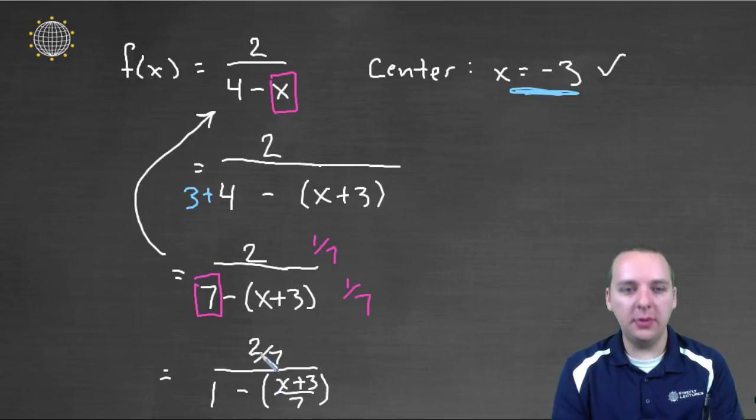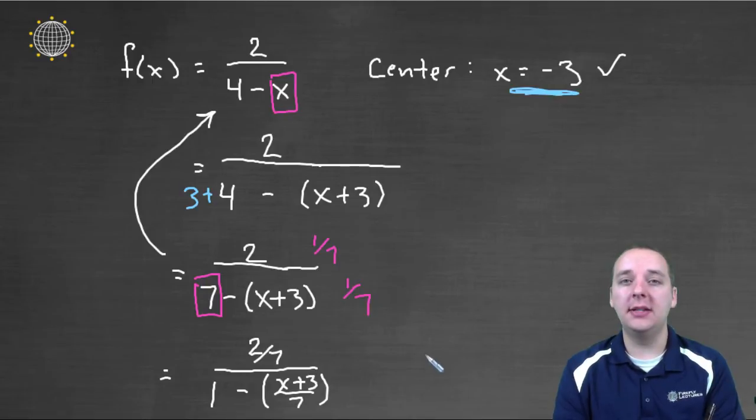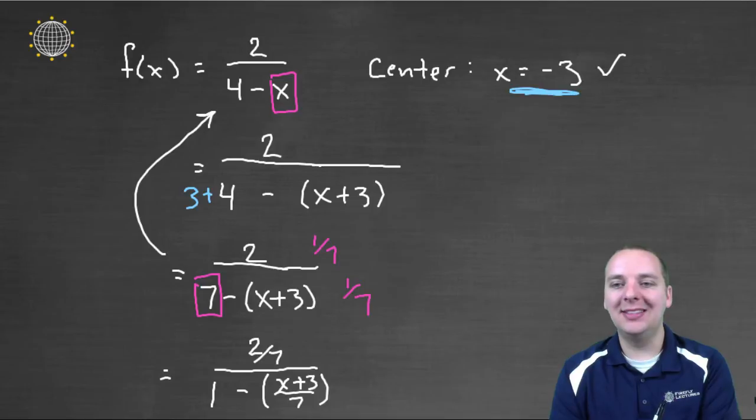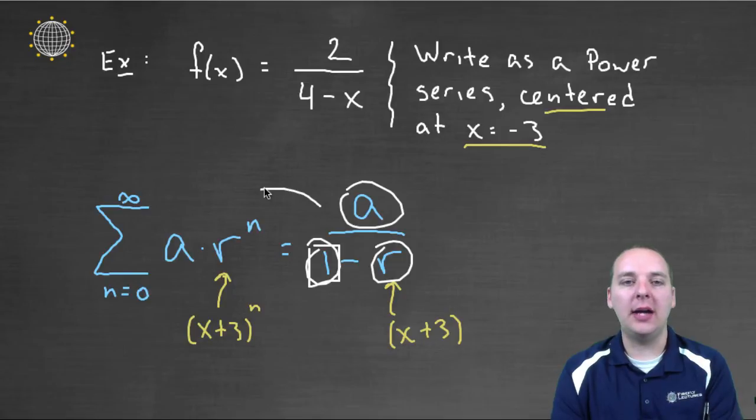Now, I know that might worry some of you that having this x plus 3 over 7, maybe that would throw off where it's centered and all that good stuff. It actually doesn't mess anything up and I'll convince you of that in just a minute. OK, so I think this is in the appropriate form, it's a over 1 minus r. I think we're ready to backtrace this now and write it as a power series.